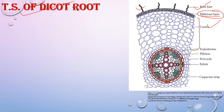The epidermis is followed by a broad band of cortex made of parenchymatous cells — thin-walled large-sized cells with large intercellular spaces; these are living cells. The innermost layer of the cortex forms a prominent single-layered endodermis, which is universally present in roots. The radial walls of endodermis cells have special thickenings called Casparian strips, which help in forming a watertight channel. The endodermis is followed by a single layer of pericycle containing vascular bundles.